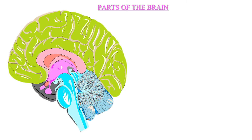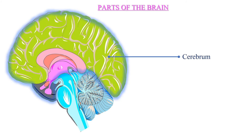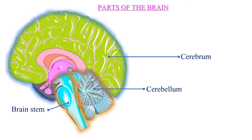Let's understand the parts of the brain. The brain is basically divided into three main parts. The first is the largest part, called the cerebrum. The second is called the cerebellum, also known as the little brain. The third is called the brain stem.